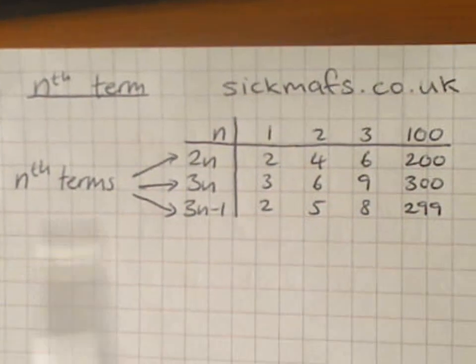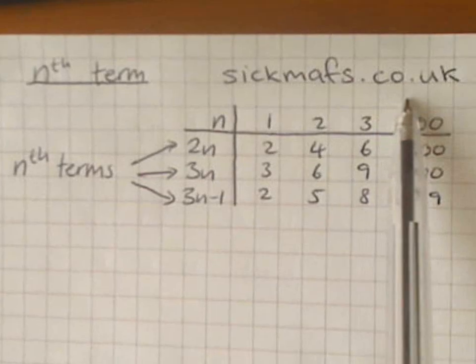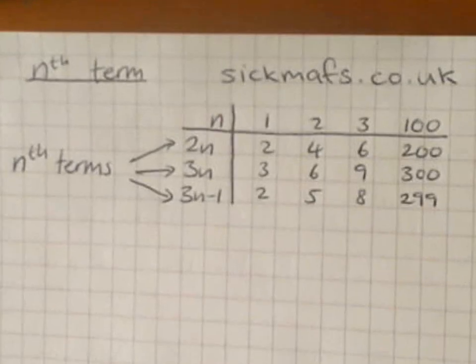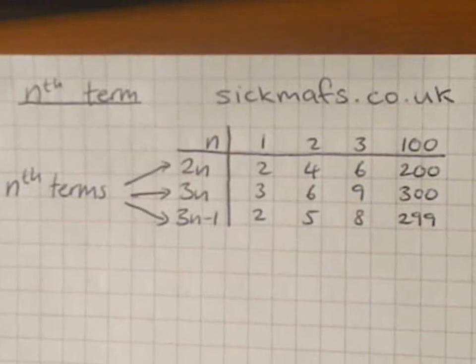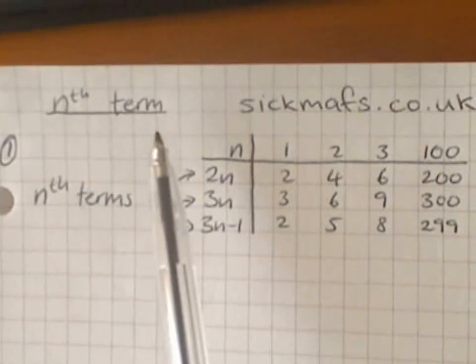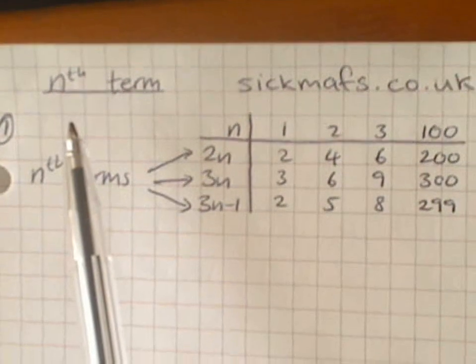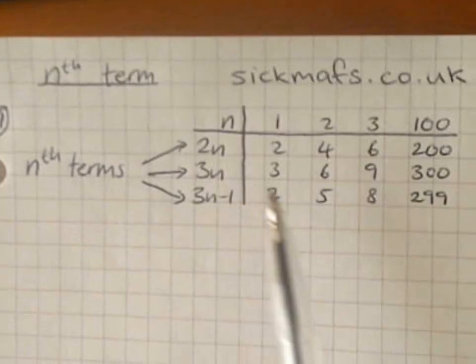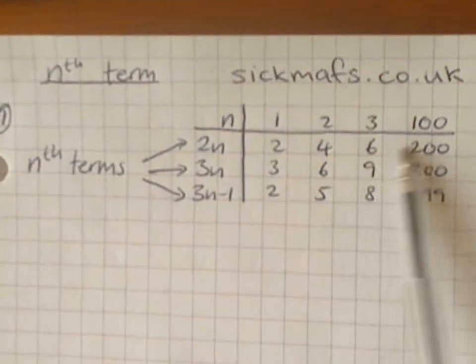Welcome to a video from sicmaths.co.uk where you'll find lots of videos about GCSE maths. This topic is the nth term. It's just about finding rules to find any number in a pattern. These are examples of patterns, these three rows.